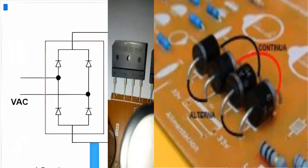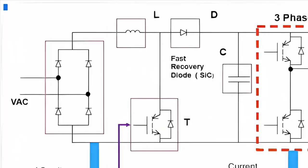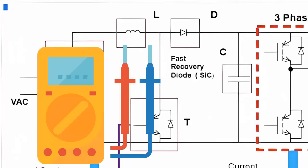To achieve this transformation, a bridge of diodes is used, devices that allow the current to pass in only one direction when configured properly.